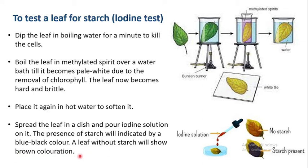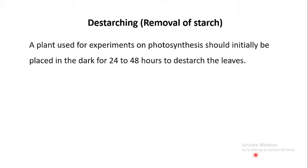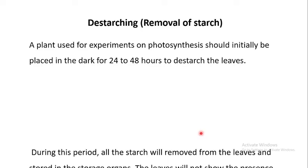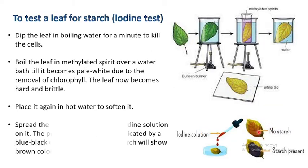A leaf with starch will show blue-black coloration. If you take a leaf directly from a plant in sunlight, starch will be present. But if you take a leaf from a destarched plant kept in the dark for 24 hours, the leaf will show brown coloration.